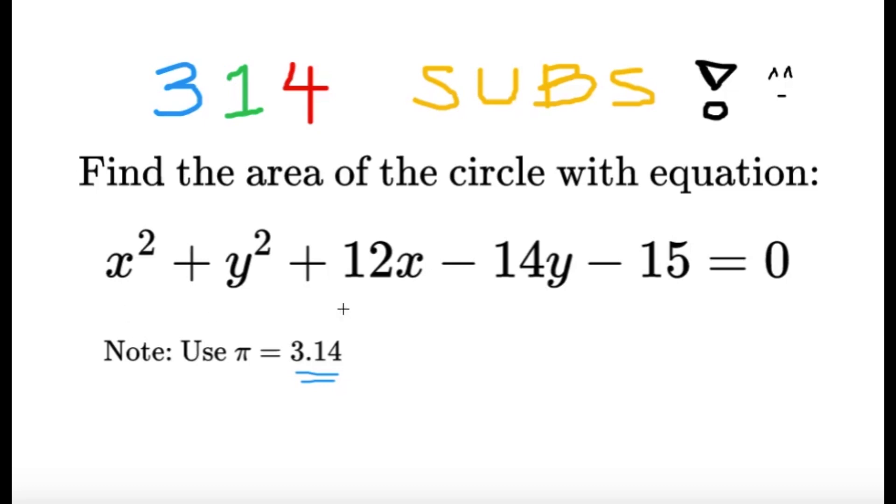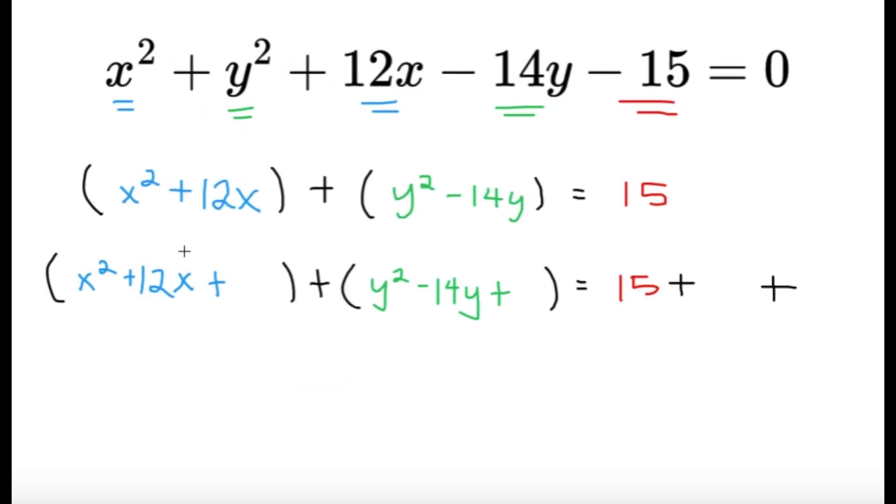Now first thing to do is collect the x's and the y's respectively. We're collecting the x squared and the 12x into one factor under one parenthesis, y squared and minus 14y into one parenthesis, and the constant we just put it on the other side. So it's negative 15, we put on the other side it's going to be 15.